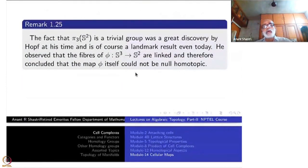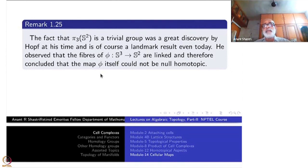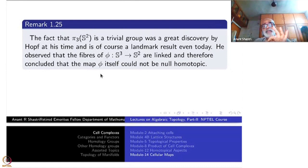One more remark: the fact that pi_3(S^2) is non-trivial was a great discovery by Hopf in his time — a landmark result even today. He observed that the fibers of the Hopf map phi from S^3 to S^2 are all circles (S^1's), and they are linked in a very particular way — these are called Hopf links. The non-triviality of this link implies the map itself is non-null-homotopic, i.e., represents a non-trivial element of pi_3(S^2).